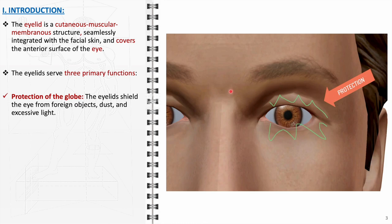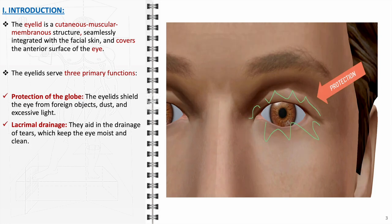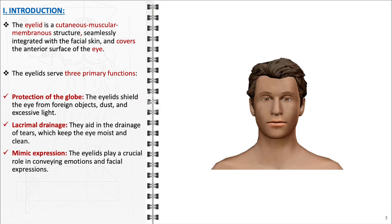The eyelids play an integral role in the lacrimal system, responsible for the production and drainage of tears. Tears are essential for keeping the surface of the eye moist and free of debris. Each blink helps to spread tears evenly across the eye and facilitates their drainage through the lacrimal puncta, tiny openings located at the inner corner of the eyelids. Additionally, the eyelids are crucial in expressing emotions; the subtle movements of the eyelids can convey a wide range of emotions, playing a significant role in nonverbal communication.